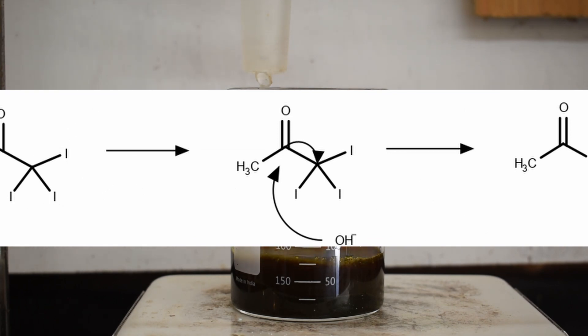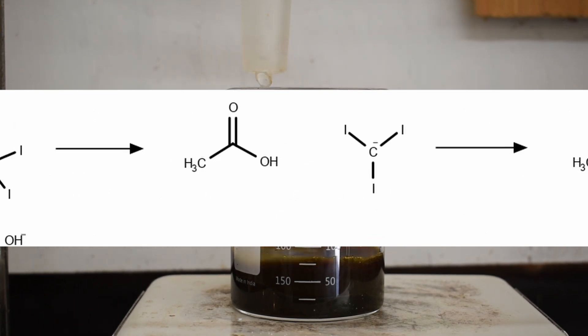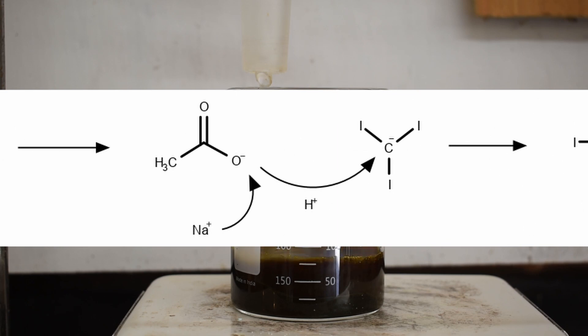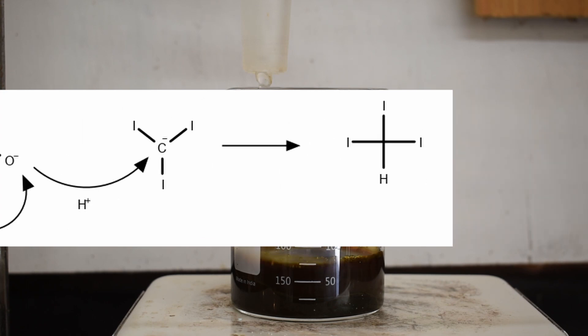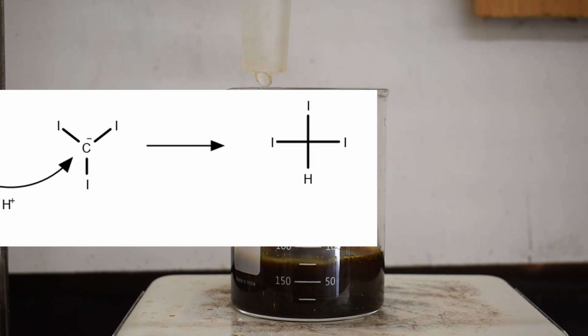The hydroxide in the solution then attacks the electrophilic carbon of the acetone. This causes our intermediate product to be kicked off and acetic acid forms in the process. The intermediate being a carbanion is very unstable and it picks up the hydrogen. This forms the acetate ion and our desired product which is iodoform.